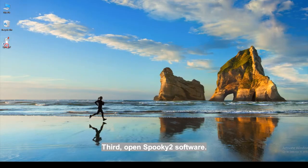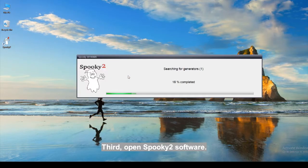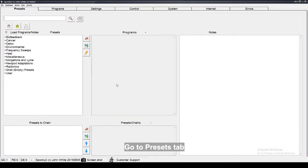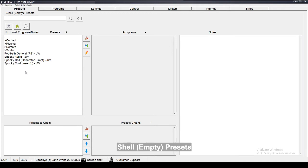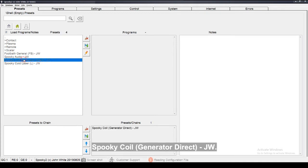Third, open Spooky2 software. Go to Presets tab. Click Shell Empty Presets Spooky Coil Generator Direct GW.